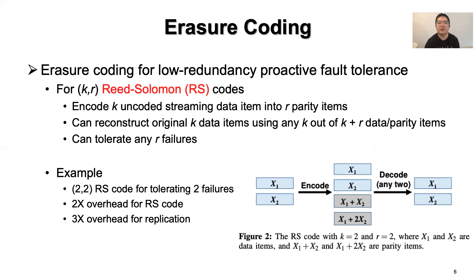Erasure coding has been traditionally used to provide fault tolerance in the areas of communications and distributed storage. In this work, we focus on erasure codes based on the classical Reed-Solomon codes, called RS Codes, which have been widely used in production storage systems. RS Codes are associated with two configurable integer parameters, K and R. For any K encoded data items, RS Codes encodes them into R coded parity items, such that any K out of K plus R data and parity items can reconstruct the original K data items. This implies that RS Codes provides fault tolerance against the failures of any R items. For example, a 2x code has 2 times overhead to tolerate 2 failures, whereas replication needs 3 times overhead to tolerate 2 failures.